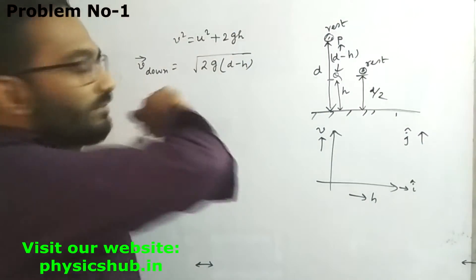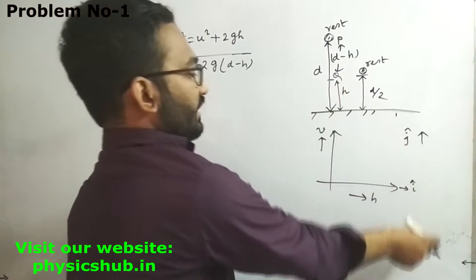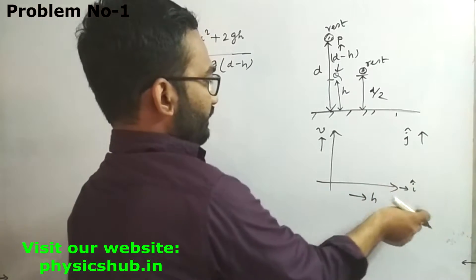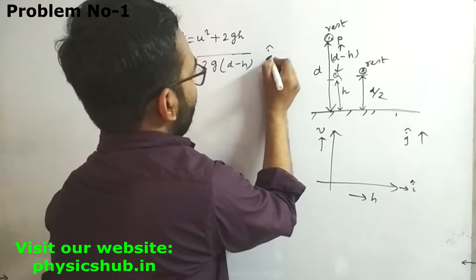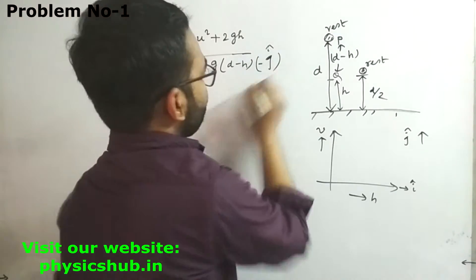We add a vector sign. It's moving in the j-cap direction, but negative j-cap direction, so the velocity has a negative sign.